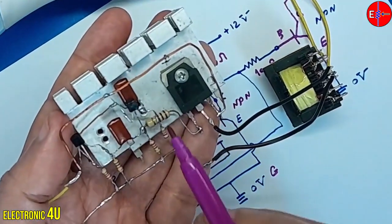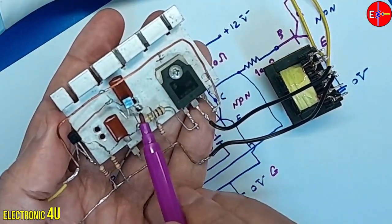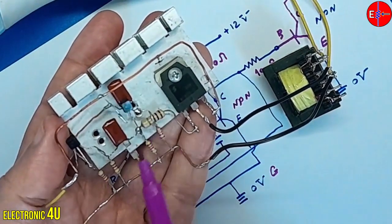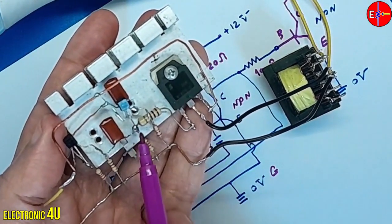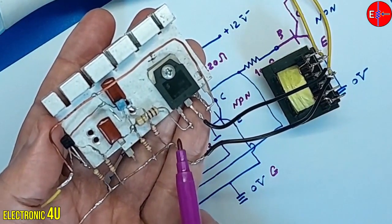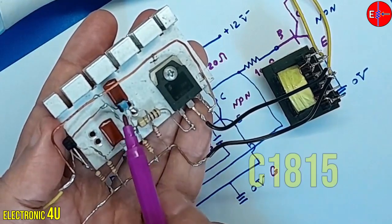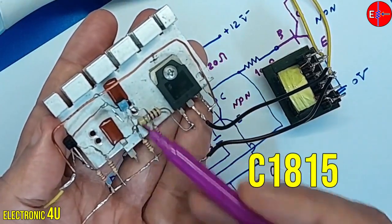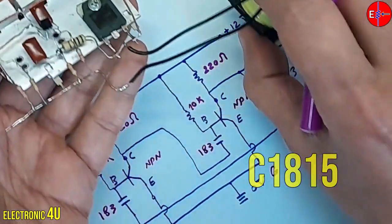The circuit output is directed to the middle pin of the C1815 transistor, which is connected to the base of the switching transistor through a 100 ohm resistor. The base of the C1815 transistor is positioned on the right side.